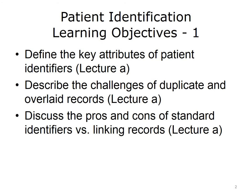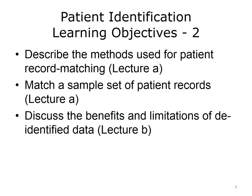The learning objectives for this unit, Patient Identification, are to define the key attributes of patient identifiers, describe the challenges of duplicate and overlaid records, discuss the pros and cons of standard identifiers versus linking records, describe the methods used for patient record matching, match a sample set of patient records, and discuss the benefits and limitations of de-identified data.